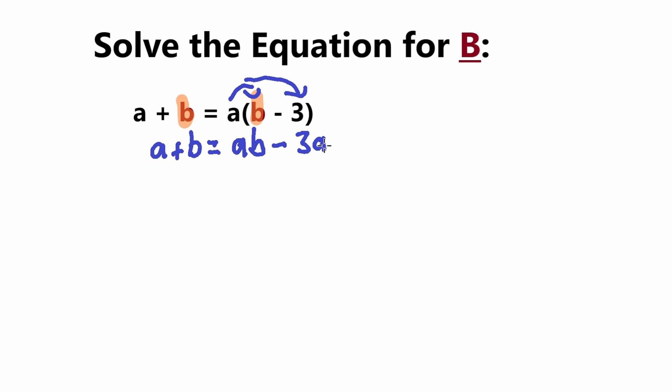So next thing we want to do is we want to get all the b's, all the terms that have the variable b in them, on one side. So I'm going to put all the b's on the right side. So whatever is not a b on the right, whichever does not have a variable b on the right side, I will move to the left.